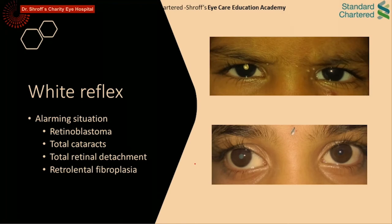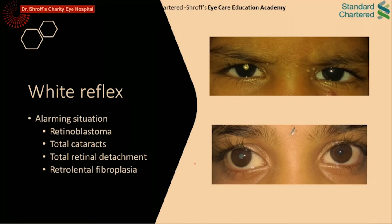A white reflex, on the other hand, is seen due to reflection of light from a totally opacified lens or an abnormal retina. This is the commonest symptom and an important sign of retinoblastoma, which is the most common primary intraocular tumor. It is an alarming situation and warrants urgent referral to a specialist. The reflex in retinoblastoma is often yellowish-white, differentiating it from the grayish-white reflex from other causes such as total cataracts, total retinal detachments, and end-stage retinopathy of prematurity.